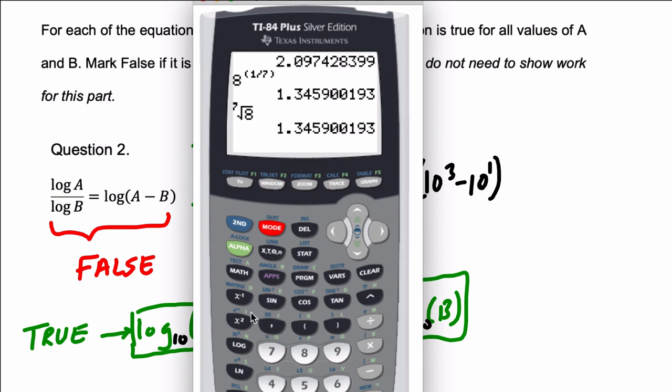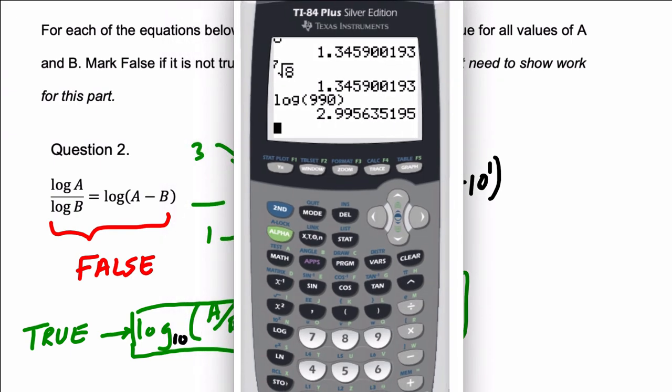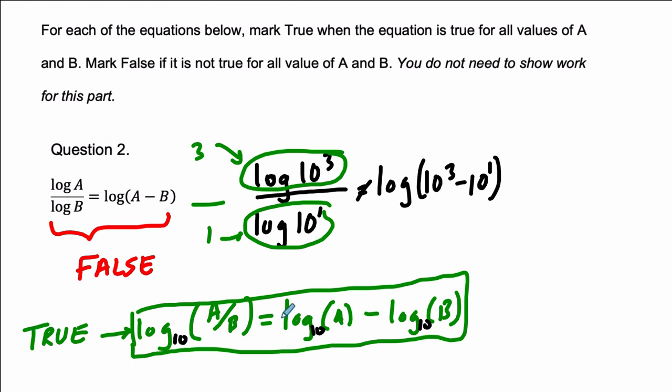We've got common log right here of 990. And that equals 2.99. So it's close, right? It's close to 3, but not exactly equal to it. So again, if you're dealing with a true and false question, you're not sure if it's correct, try some values out.